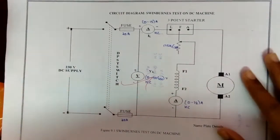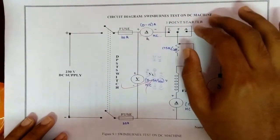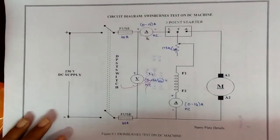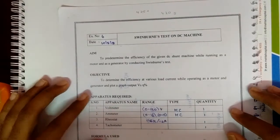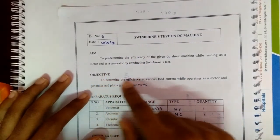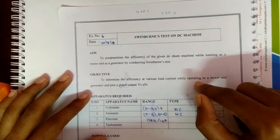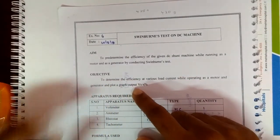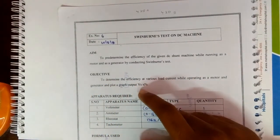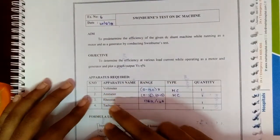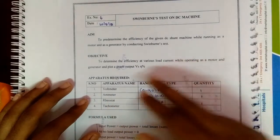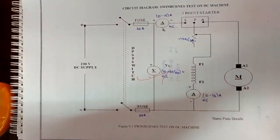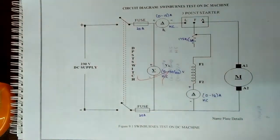In this experiment we're going to see Swinburne's test on a DC machine. The circuit diagram for this experiment is shown here. The objective of this experiment is to determine the efficiency at various load currents while operating the machine as a motor and as a generator, and to plot a graph between output and efficiency. The apparatus required will be voltmeter, ammeter, rheostat, and tachometer with their corresponding ranges.